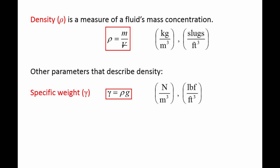The SI units of specific weight are newtons per cubic meter, and the BG units are pounds force divided by cubic feet.